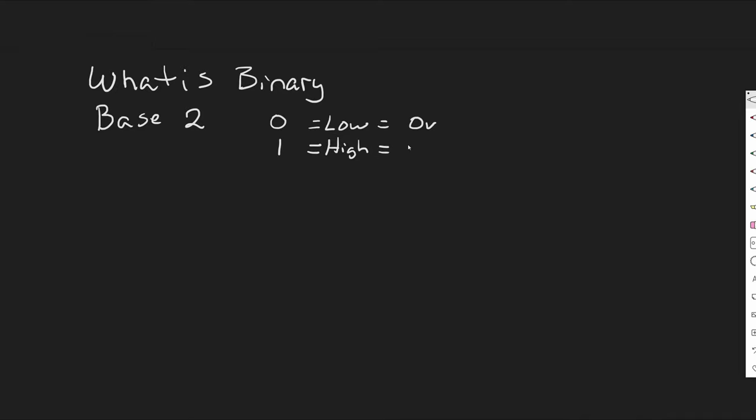One is considered a high, it's a high value, and it's referenced as five volts. Now you're going to see, if you understand computers and see that your RAM is running at 3.3 volts, well that 3.3 volts would be your high voltage, just to clarify that portion.